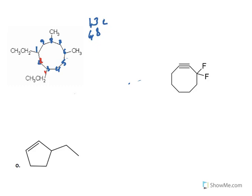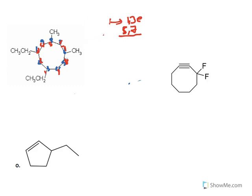If I go with another numbering starting from a different carbon — again counting one through nine — the substitutions will be one and three for the ethyl group, and five and seven for the methyl group. One and three are the same in both cases, but five and seven are much better than six and eight. So I will discard the first numbering, the one in blue.